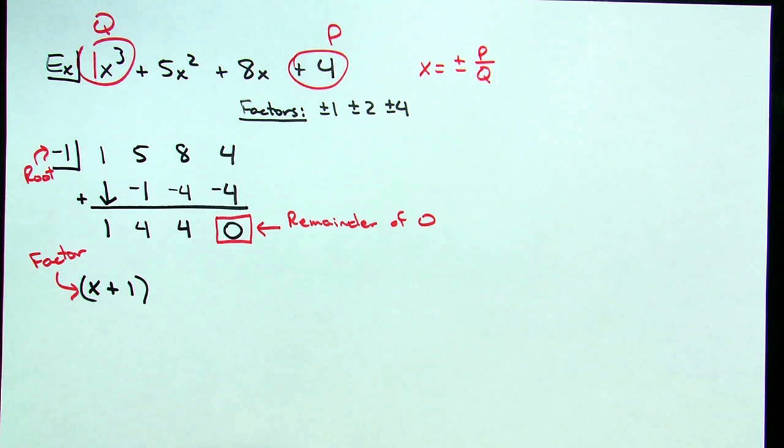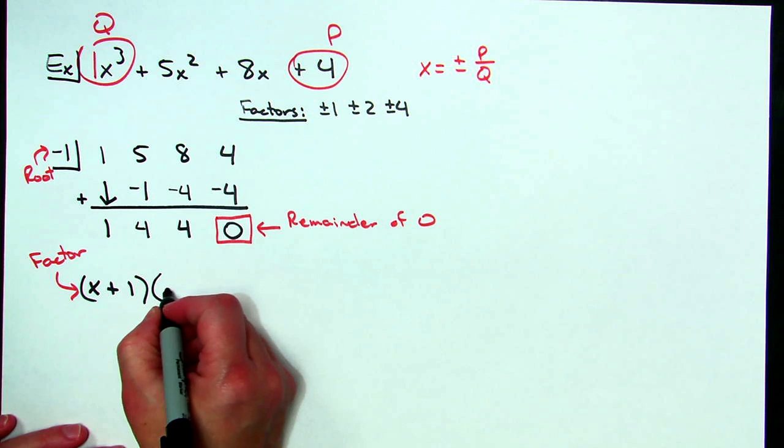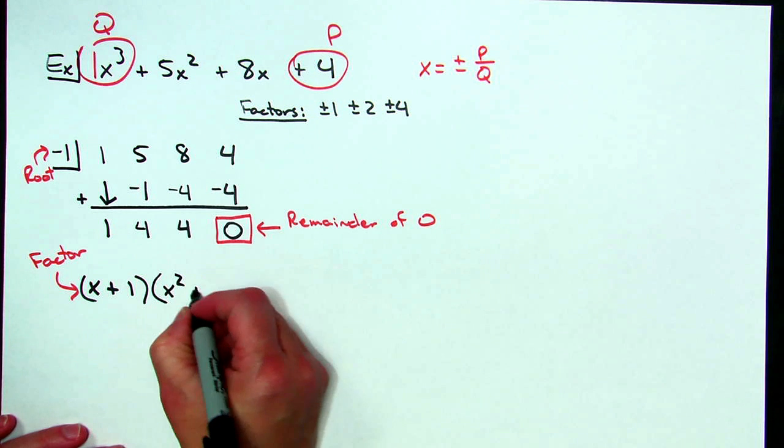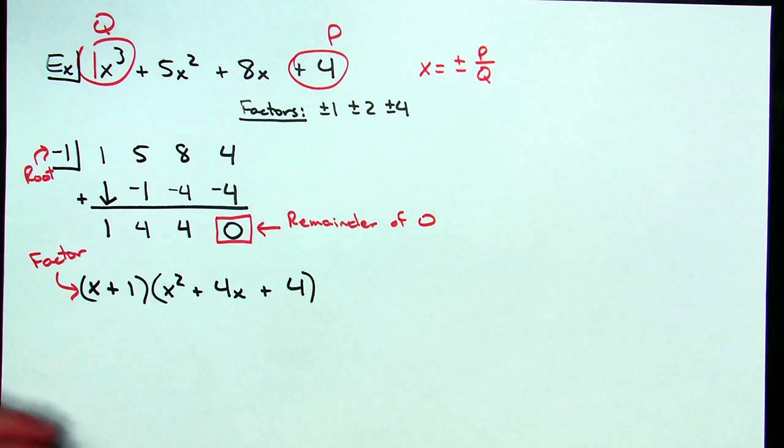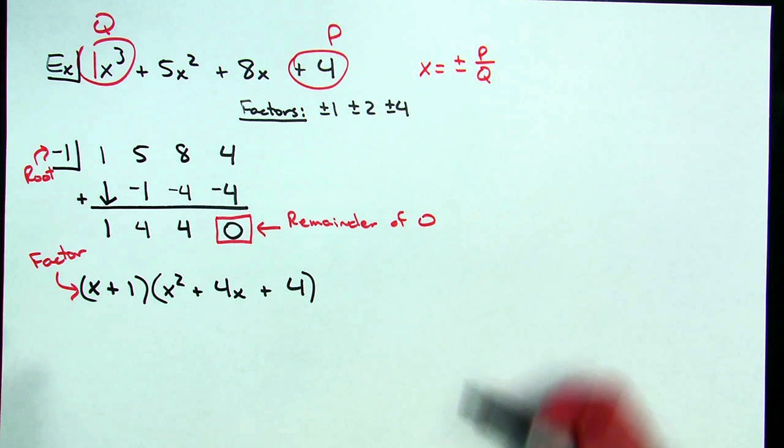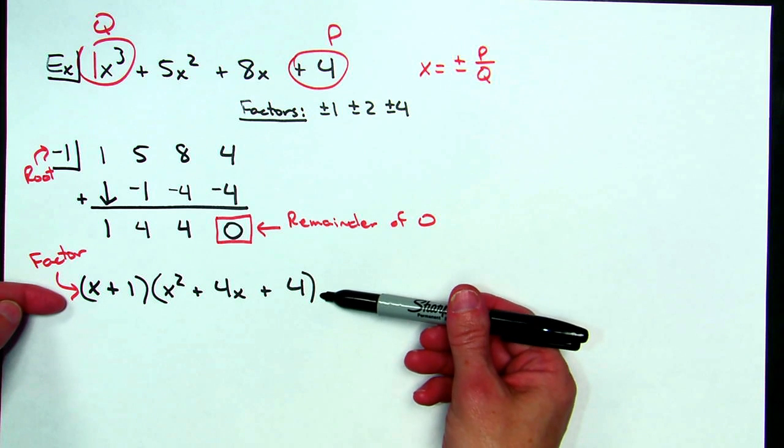So the rest of this will be an x squared plus four x plus four. I have factored my original four terms in my polynomial down to a simpler expression that has been factored. I factored into x plus one and then x squared plus four x plus four.